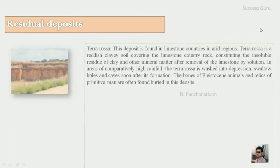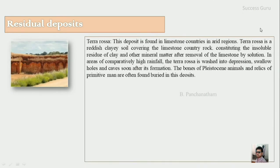The first type of residual deposit is terra rosa. This deposit is found in limestone countries in arid regions. Terra rosa is a reddish clayey soil covering the limestone country rock, constituting the insoluble residue of clay and other mineral matter after the removal of limestone by solution. In areas of comparatively high rainfall, the terra rosa is washed into depressions such as swallow holes or caves soon after it is formed.